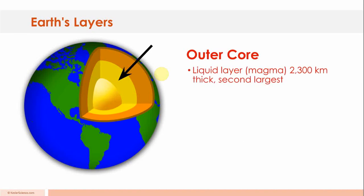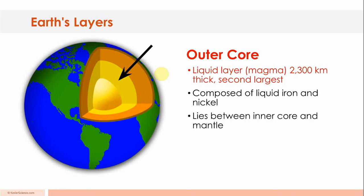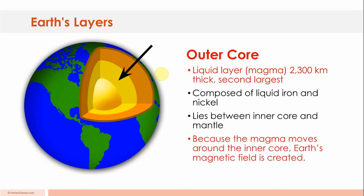The outer core. Liquid layer. Magma. 2,300 kilometers thick. It's the second largest layer. Not as large as the mantle. Composed of liquid iron and nickel. Lies between the inner core and the mantle. Because the magma moves around the inner core, Earth's magnetic field is created.